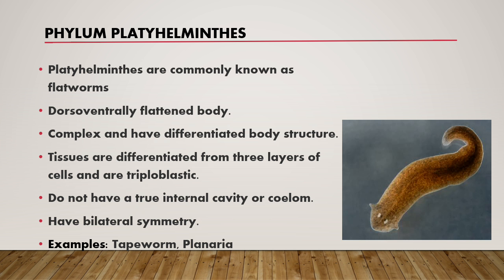You can see here in the diagram the tapeworm. In this type of phylum, some types of worms are common. They have a complex and differentiated body structure. Tissues are differentiated from three layers of cells — then they will be called triploblastic. They do not have a true internal cavity and they have bilateral symmetry.